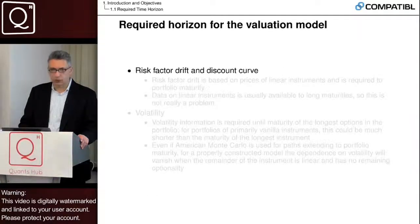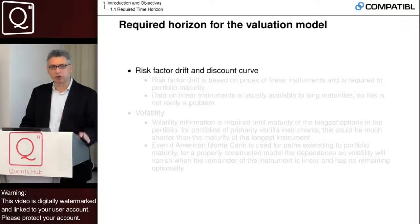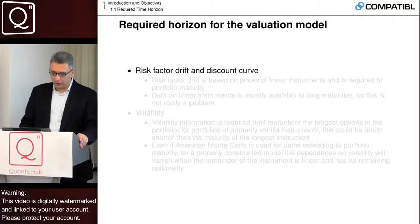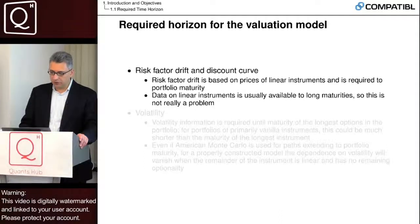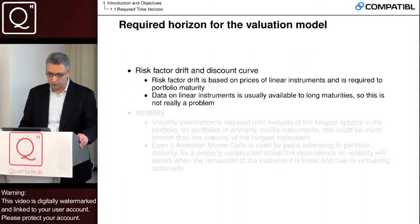The required horizon for the valuation model — the model used to value the trades, not the risk factor projection model — differs for the drift and discount curve versus volatility. The drift is based on prices of linear instruments and is required to portfolio maturity. Data on linear instruments is usually available to long maturities, so it is not really a problem to obtain; a swap curve is available to 30 years or so.